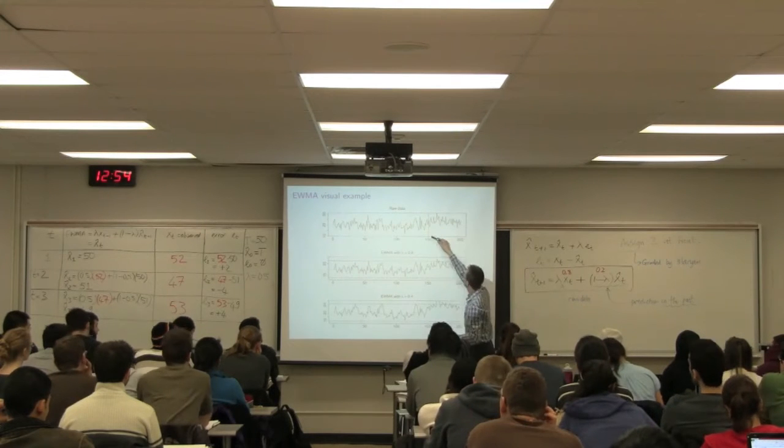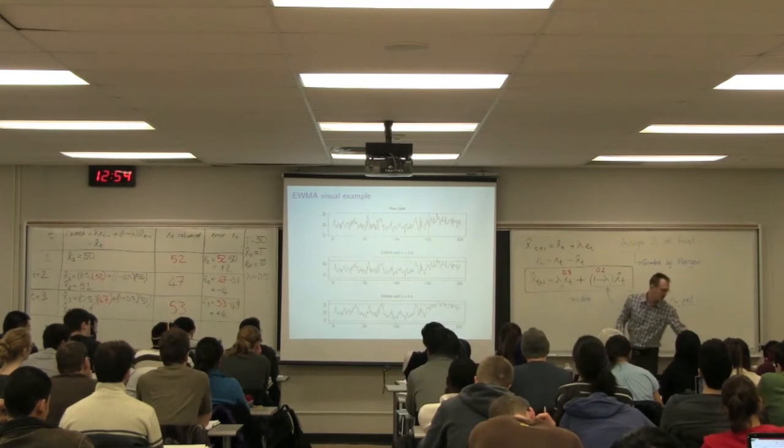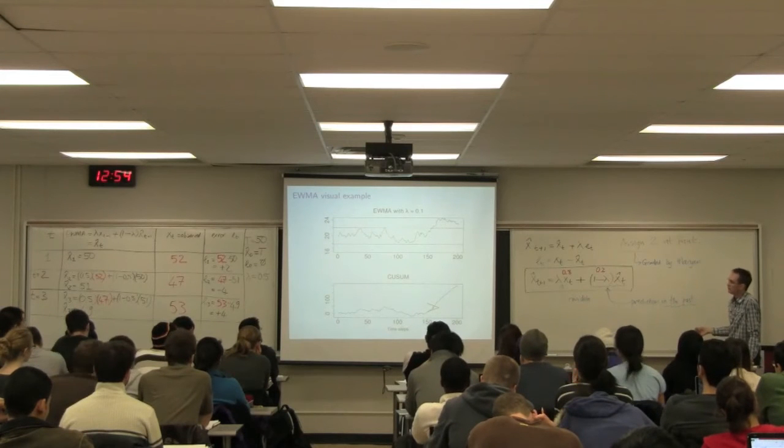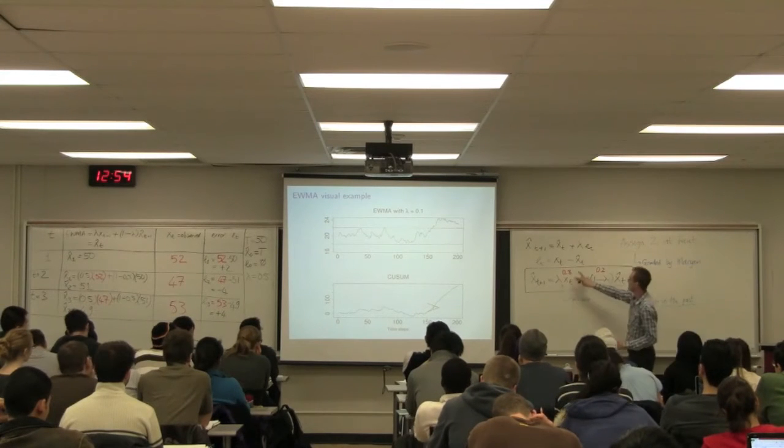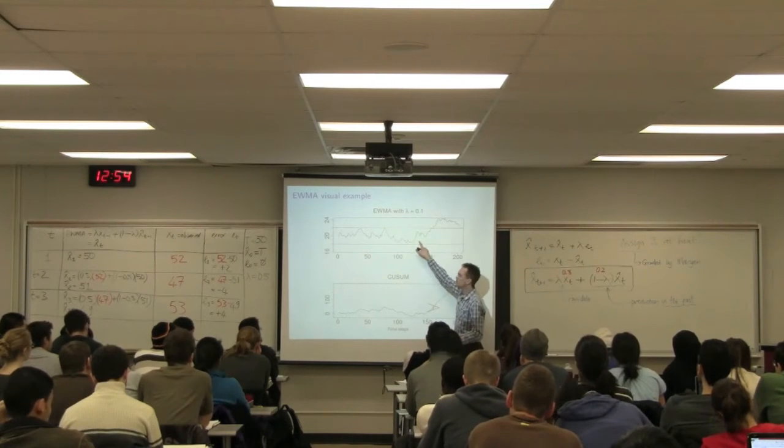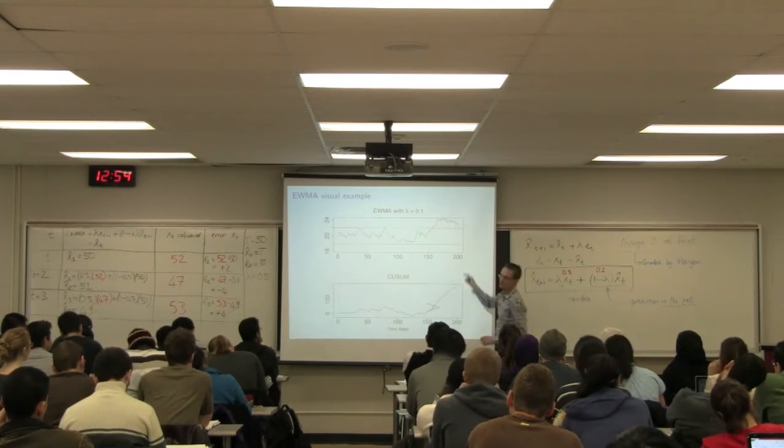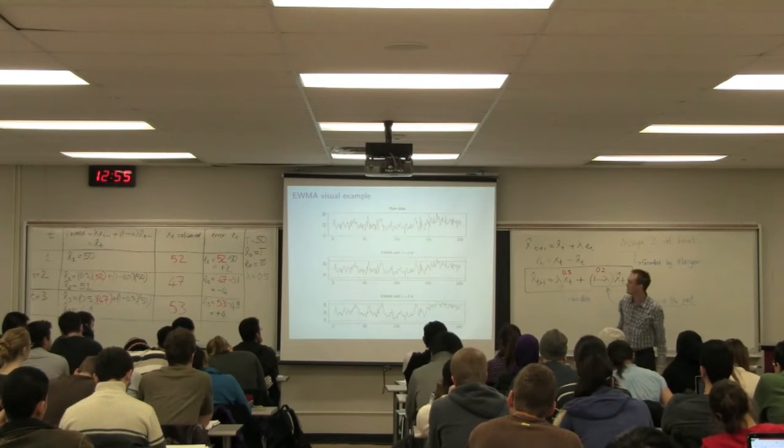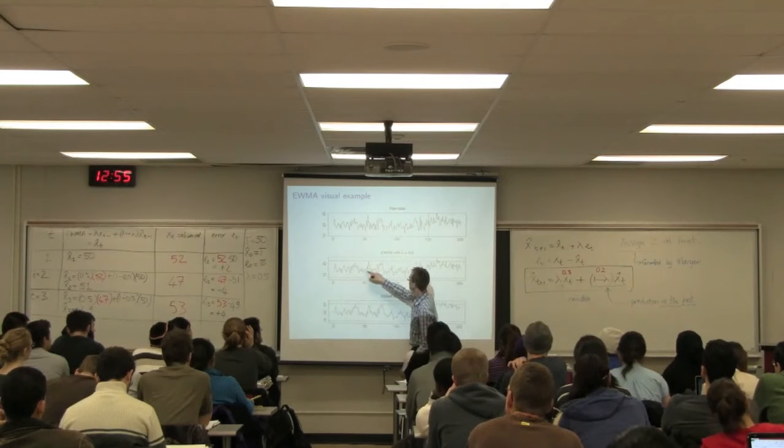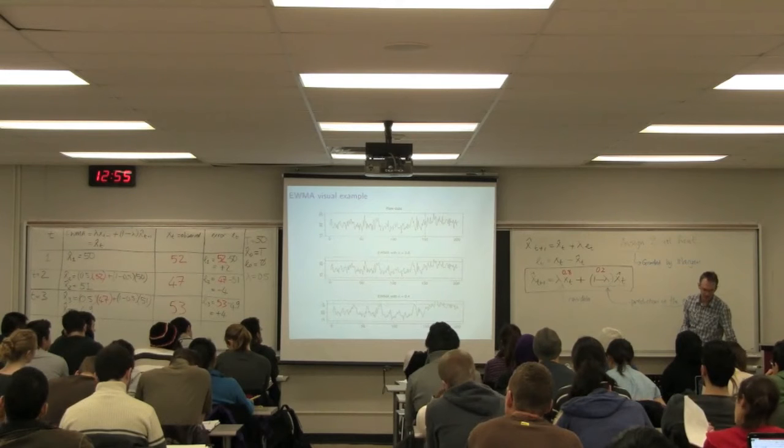If we move on and we go to a very small lambda, 0.1. So now I'm giving only 10% weight to my raw data and 90% to my historical data. We get a very smooth plot and I'm starting to see these three up and down trends and then that very strong rising trend. If we go back to my previous slide, those three trends, they're a little bit apparent over there, a little bit apparent over there, but they're showing more clearly now or being smoothed out more clearly in the EWMA.